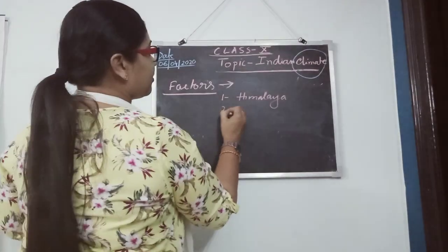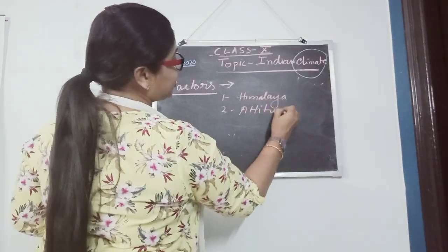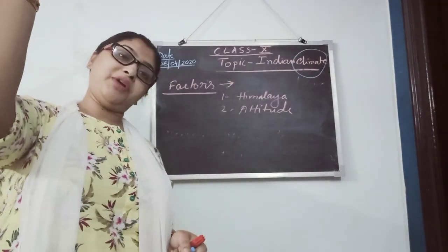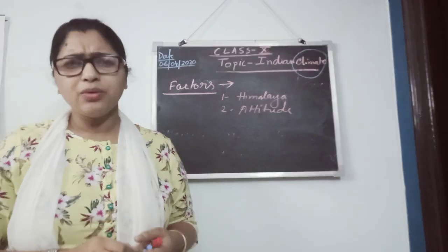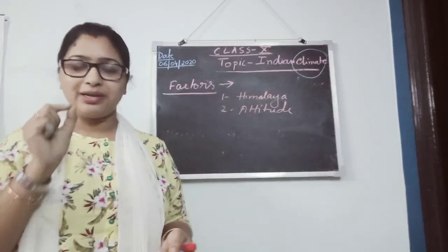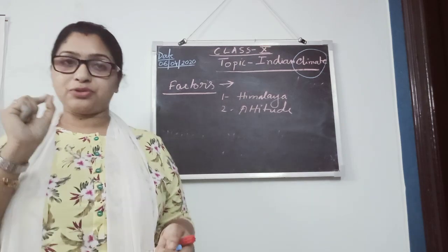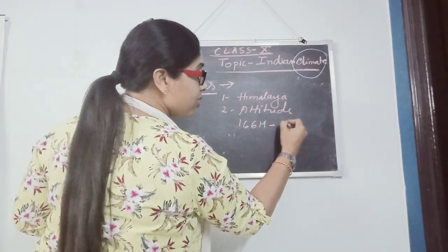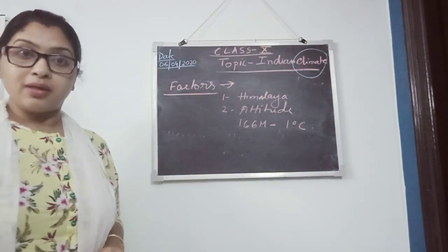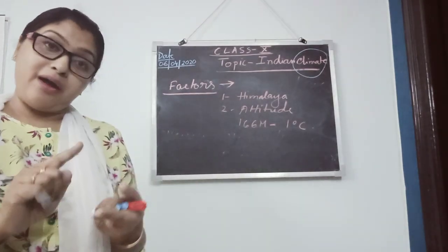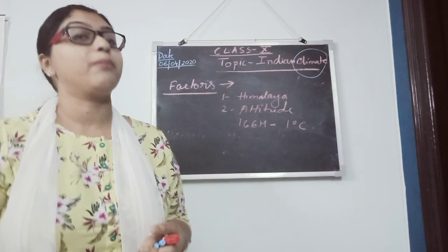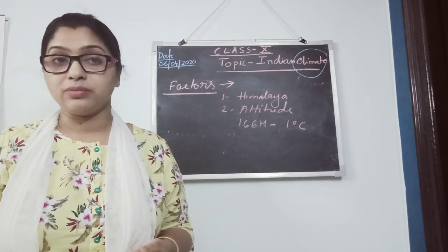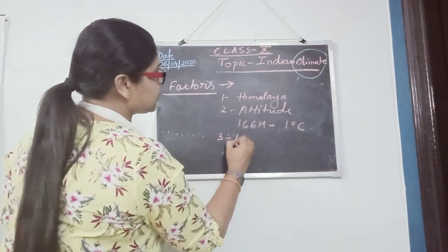The next factor is altitude. With height, temperature decreases. This is known as the lapse rate. The normal lapse rate states that for every 166 meters of height, temperature decreases at a rate of 1 degree centigrade. So places at greater height will have lower temperature, and plains at lower height will have higher temperature.